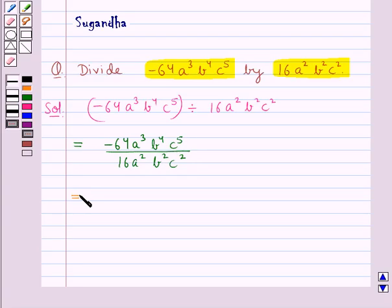we first divide the numerical coefficients. That is, we would divide -64 by 16.